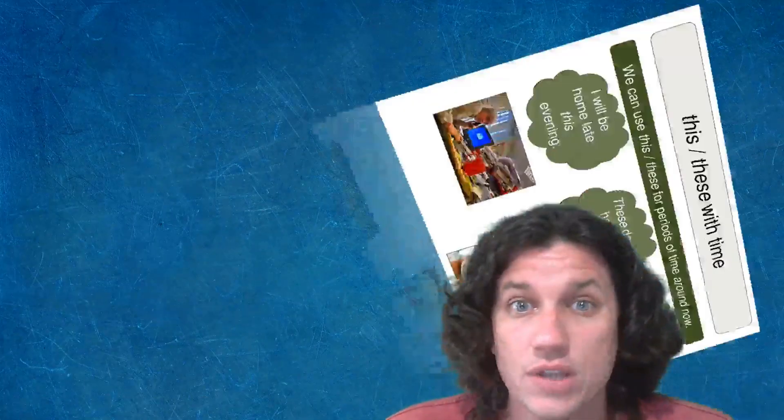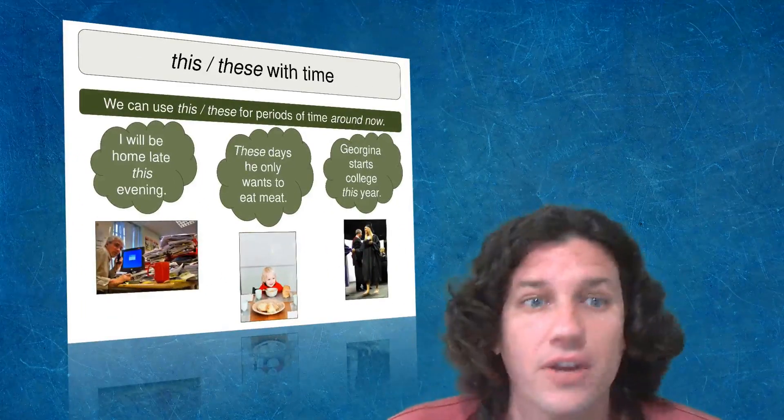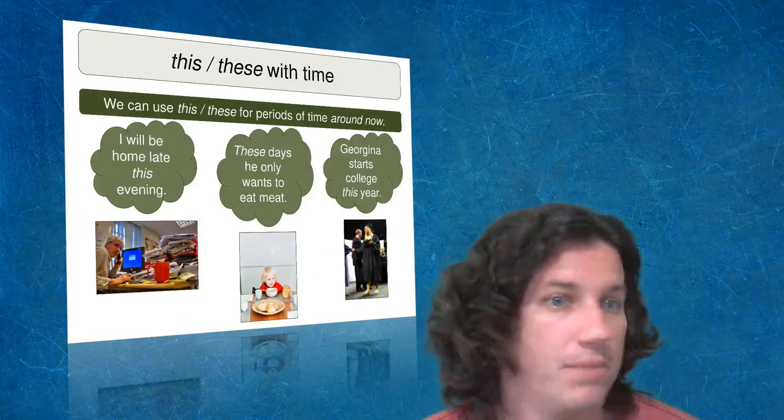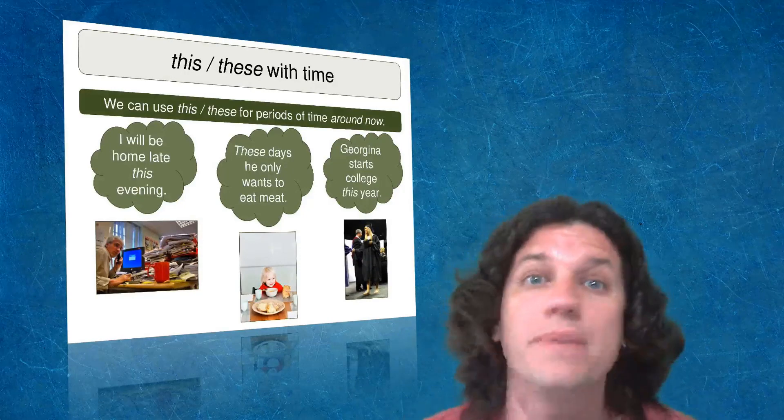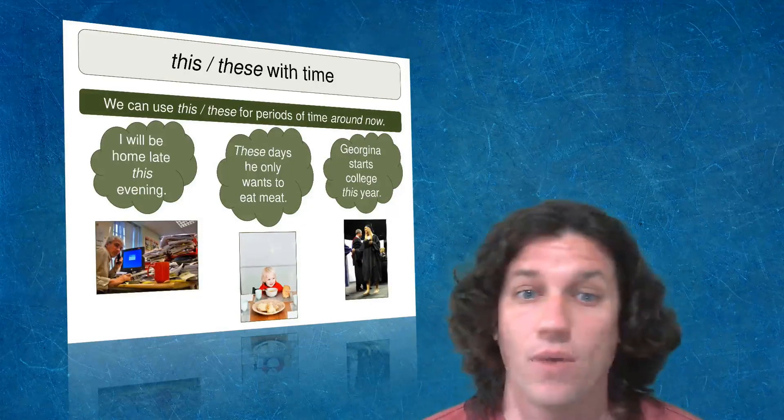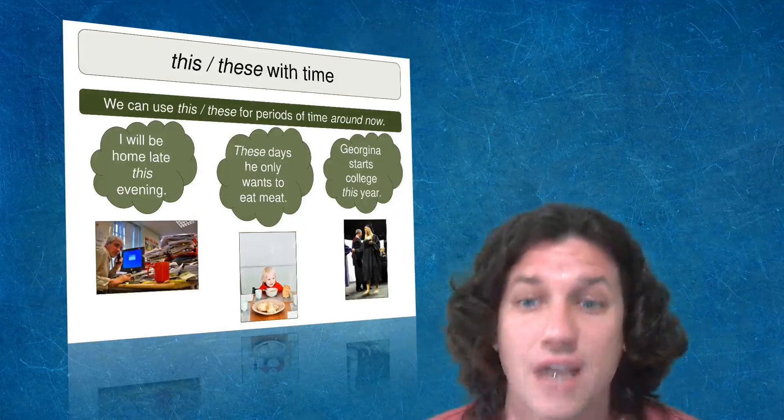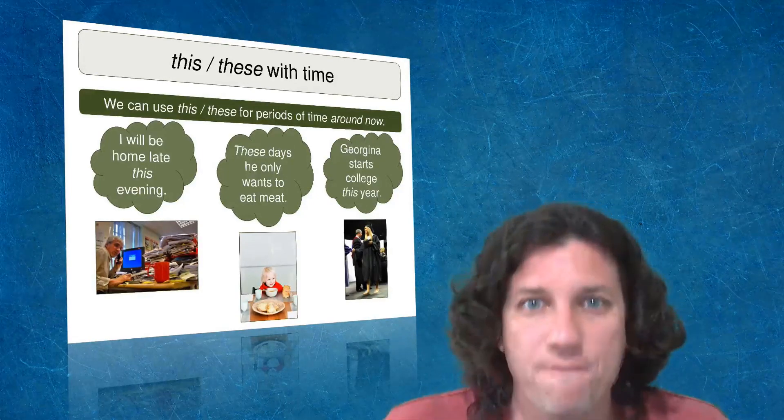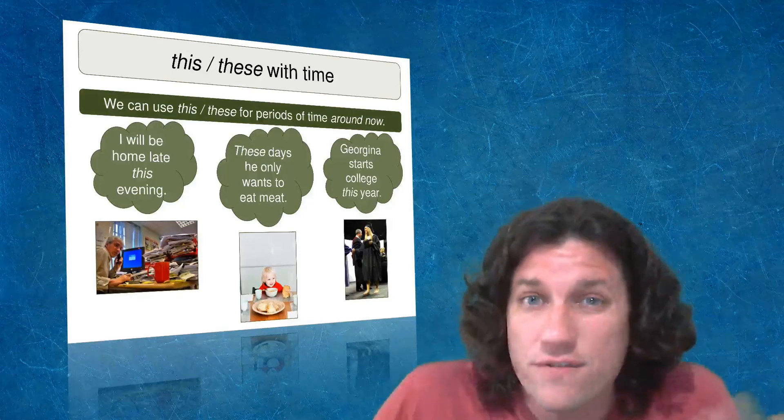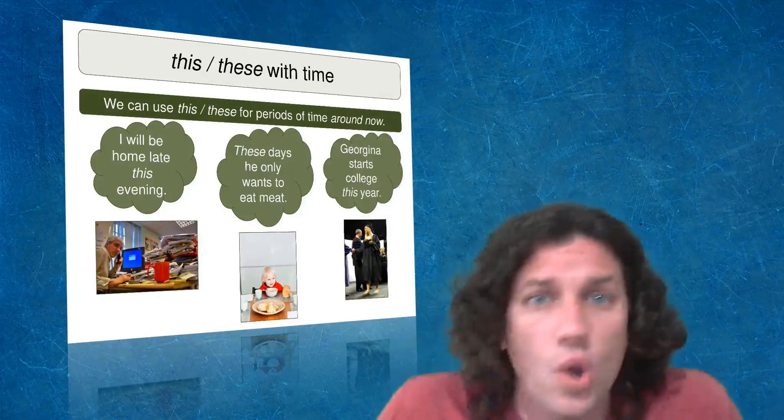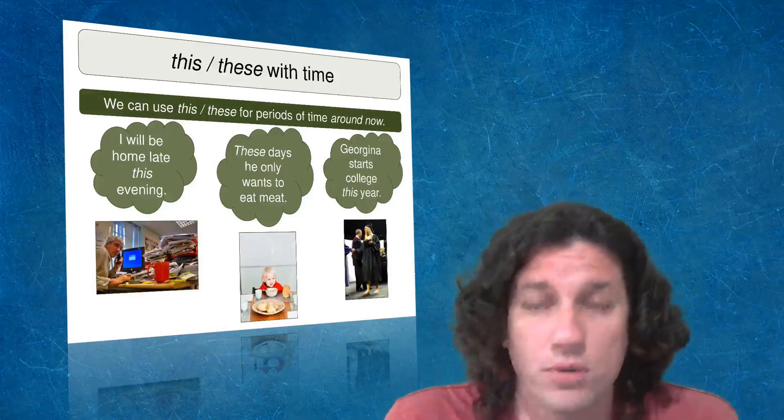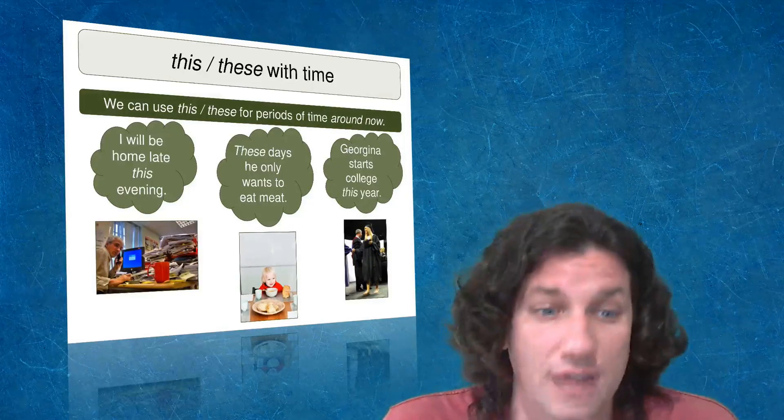And that is this and these with time. So this and these, we can use them for periods of time around now. And you can see that I've got three examples here up on the slide. I will be home late this evening. These days he only wants to eat meat. Georgina starts college this year. So by once you show them the kind of basics of near and far, then you've got to kind of expand it because this, that, these, and those get used with a lot of other things. And one of the most common uses is using this and these with time.